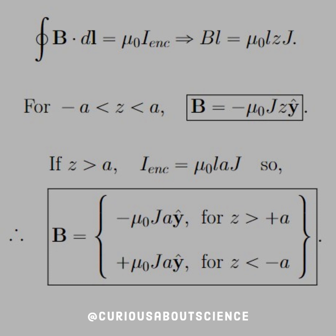It's now up to us to determine how the enclosed current is modified for where we are. Inside the slab, the current enclosed is just a function of z. The field switches sign at negative z, which is what we discussed with the right-hand rule. So inside the slab, we get a B field of negative mu-naught j z in the y-hat direction — that alternates based on the sign of z.